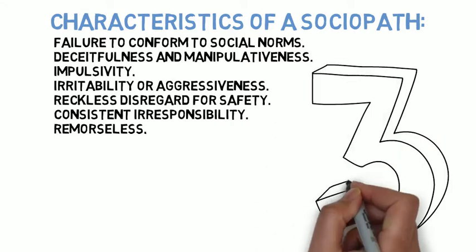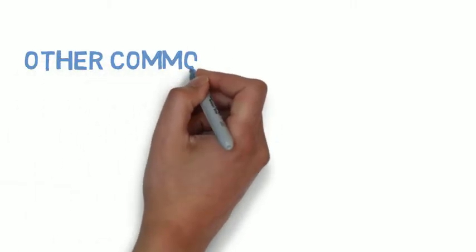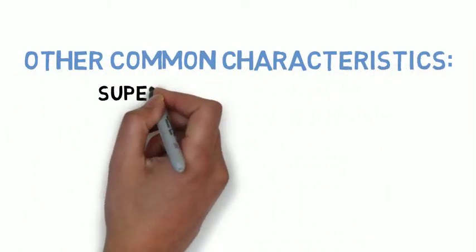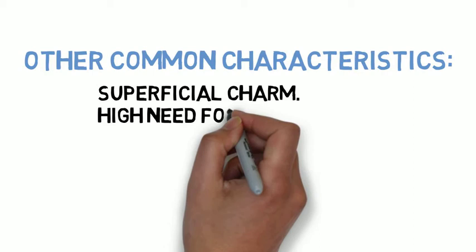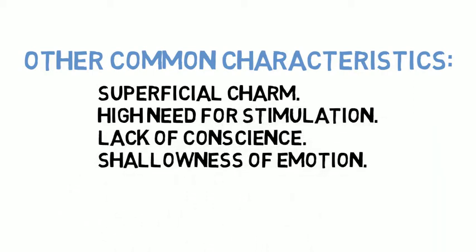According to the standards, a person could have antisocial personality disorder if they possess at least three of the seven characteristics. And other characteristics that are commonly associated with sociopaths are a superficial charm, a greater than normal need for stimulation, a lack of conscience, and a shallowness of emotion, which we'll touch on again later.